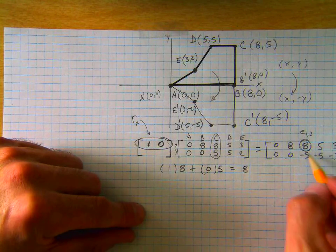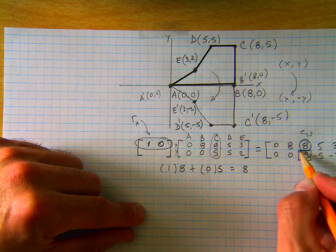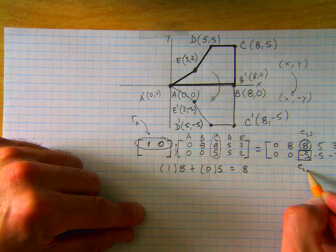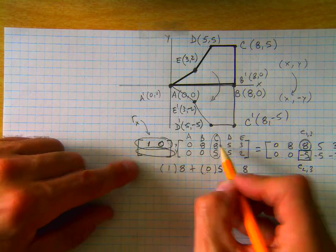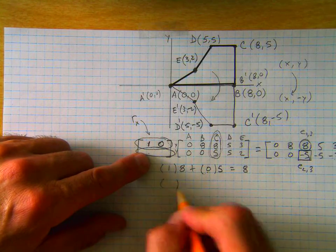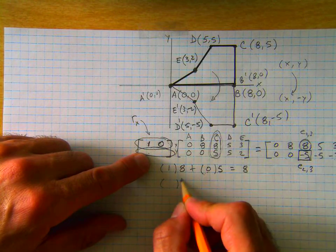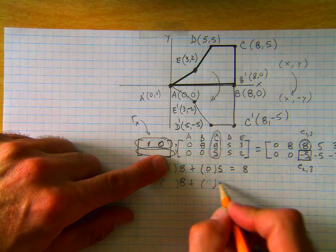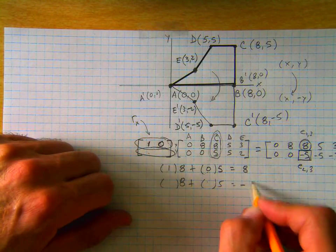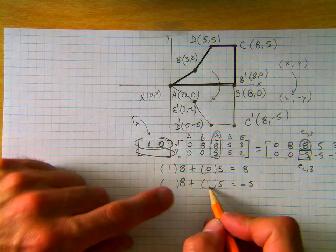Let's do the same thing now for this element, which is row 2, column 3. And so, we're going to do row 2, column 3. So, we have a mystery number times 8 plus another mystery number times 5, and we need that to equal negative 5.